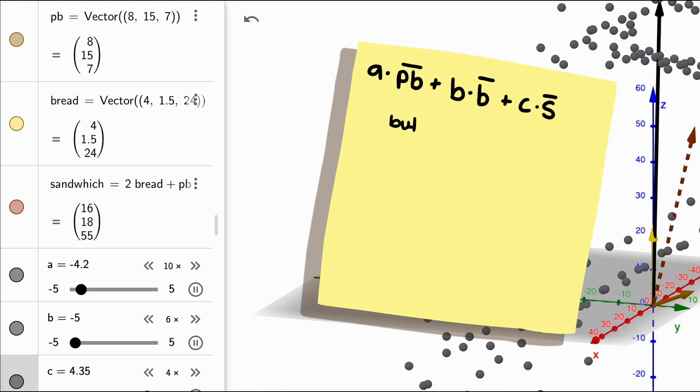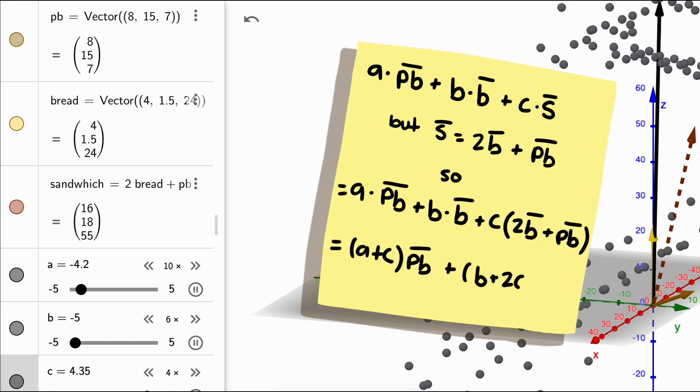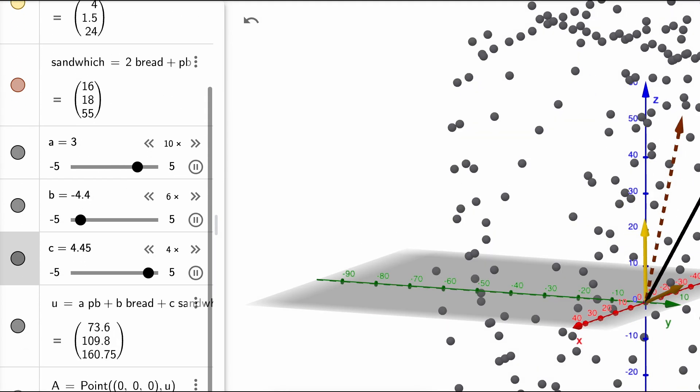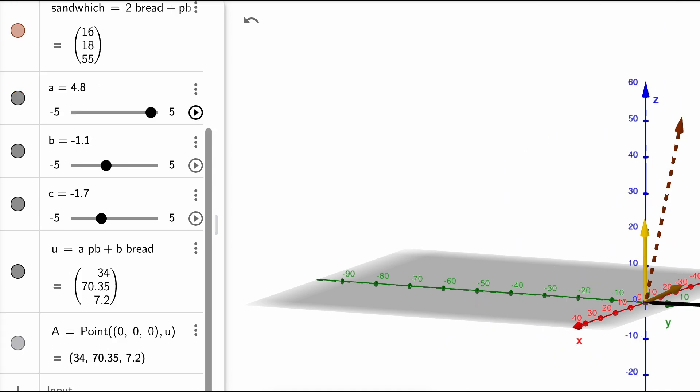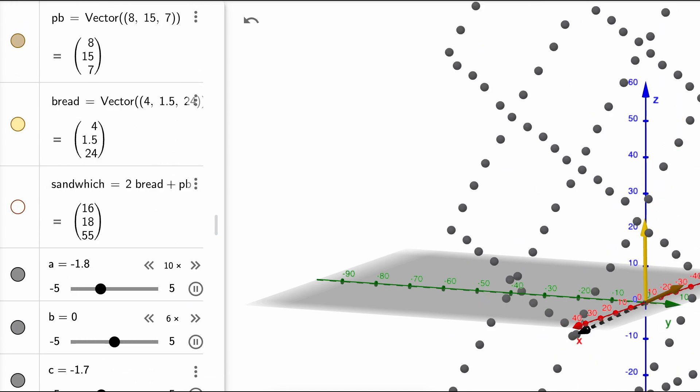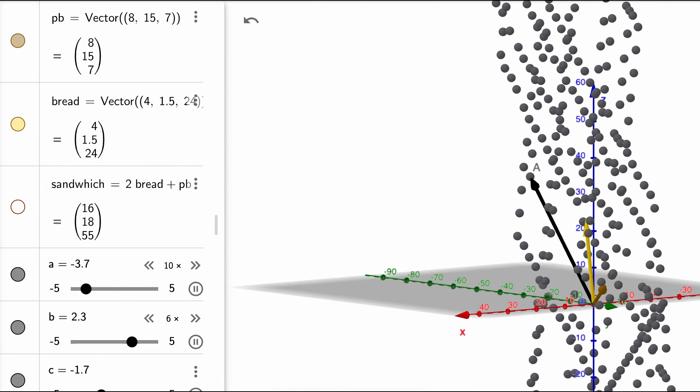Well, there are a few different ways to understand this. First, algebraically, no matter what combination of peanut butter, bread, and sandwich vectors we have, we can rewrite the combination as just a combination of peanut butter and bread, because a peanut butter sandwich is just a linear combination of peanut butter and bread. Every vector we can create with a linear combination of peanut butter, bread, and sandwich can also be made with just peanut butter and bread vectors. So the sandwich vector is just redundant information.